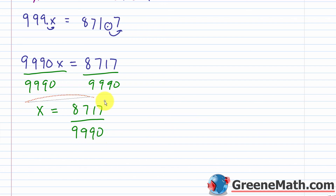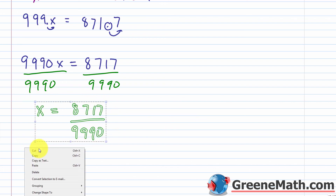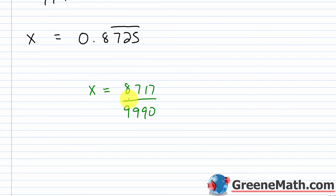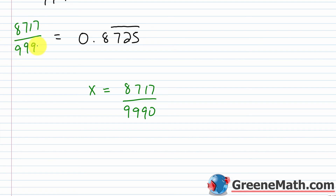Since x equals this, we can say that 8,717 over 9,990 equals 0.8725 where the 7, 2, and 5 repeat forever and ever.